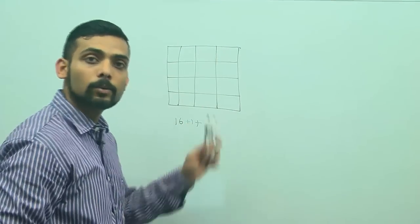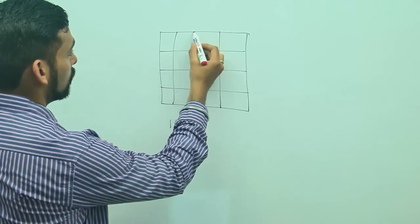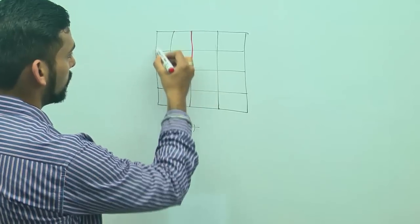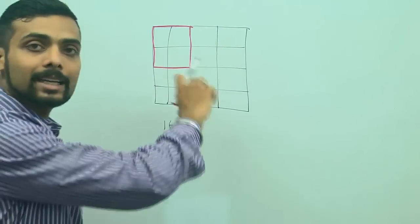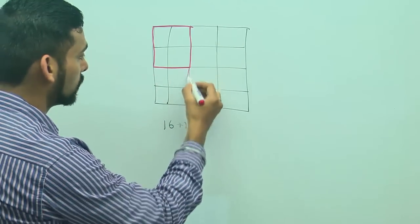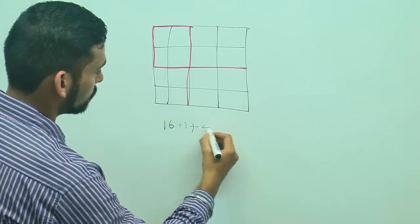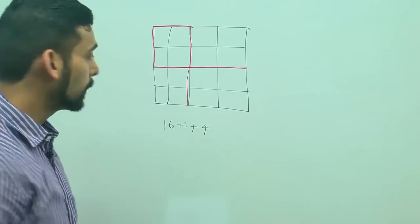Now, let me see which are the squares that are embedded inside. So, this is 1 square and like this there are 4 squares. 1, 2, 3 and 4. 4 of these squares are there. So, 16 plus 1 plus 4.